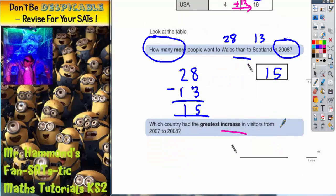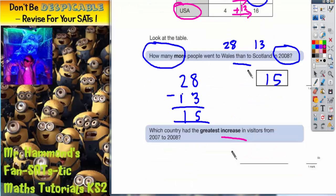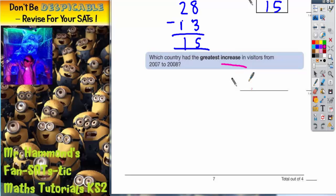Now if we check the question again it says the greatest increase. So we've got an increase of 8 for Spain, an increase of 9 for Wales and an increase of 12 for the USA. So 12 is obviously the biggest one there. So the answer we're looking for there is the USA. So which country had the greatest increase is the USA.